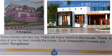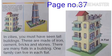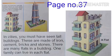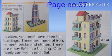A bungalow is built however we like and it is an independent house. Number two: A Flat. In cities you must have seen tall buildings. These are made up of iron, cement, bricks, and stones. There are many flats in a building and many families live there. One family can live in each flat. This is called a flat.